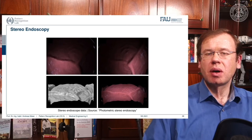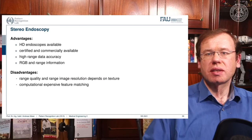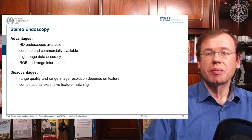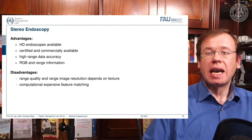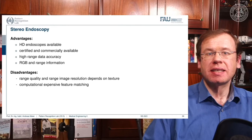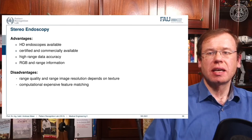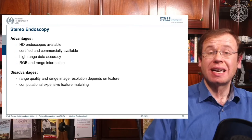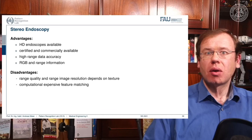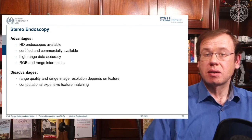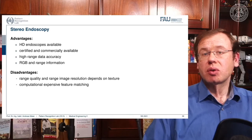This is the key problem of stereo vision. In summary, the advantages are that high-definition endoscopes are already available, certified, and commercially available, with high range data accuracy for depth computation, and you get color (RGB) and depth range information simultaneously. However, the range quality and resolution depend on texture — if you image something without texture, like a white wall or a uniform organ, you will get no depth information. Feature matching is also computationally expensive.